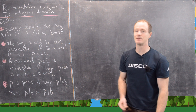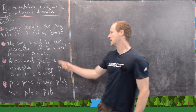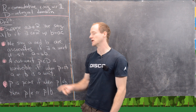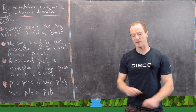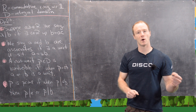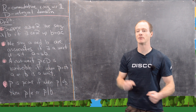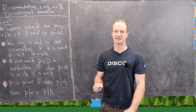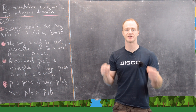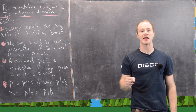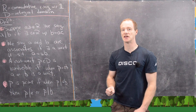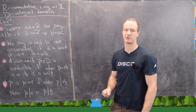Next, we say that A and B are associates if there exists a unit U such that A equals U times B. They're potentially not the same, but very close — they differ by a unit. For example, 4 and −4 are associates because they differ by −1, and −1 is a unit since it is its own multiplicative inverse.